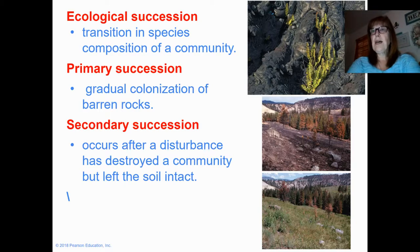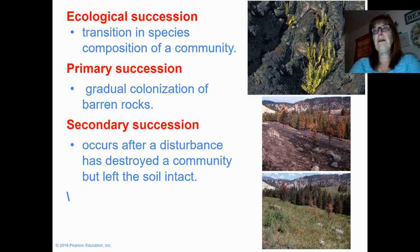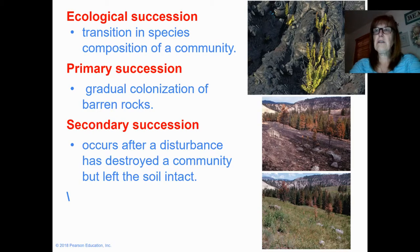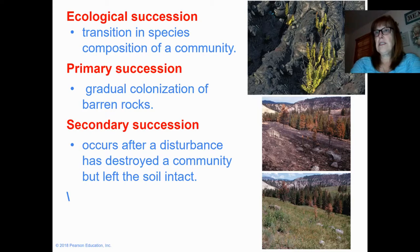Many of us in the high desert are familiar with the Blue Cut Fire that came through Cajon Pass and up the 138, wiping out a huge population of animals and plants. About two and a half to three years later, driving down the 138 you don't really see evidence of the fire unless you hike and look at old burned trees and yucca. You probably wouldn't know there was a fire there because of succession.